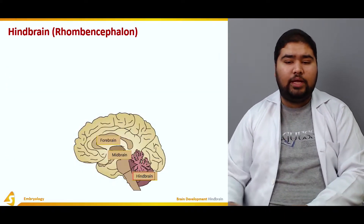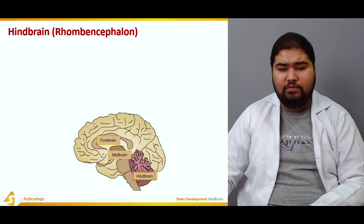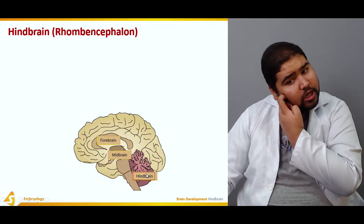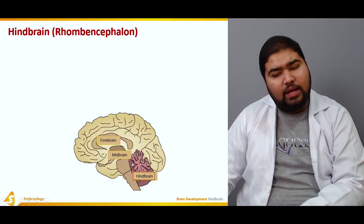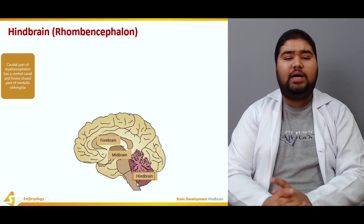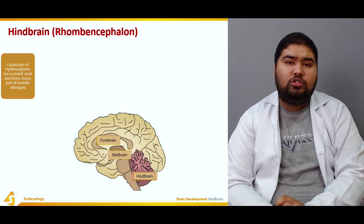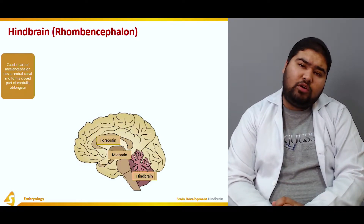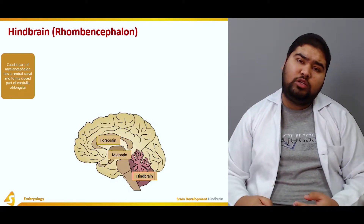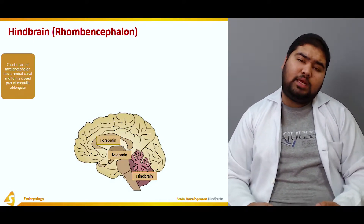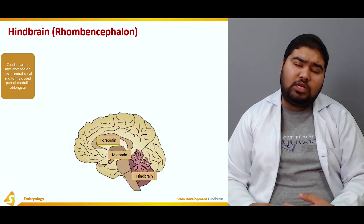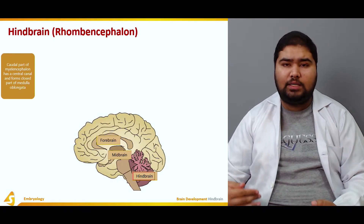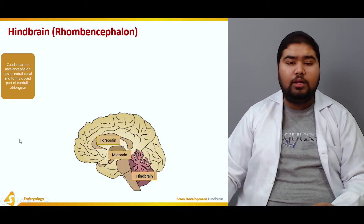In the figure you can see an adult brain — this is the forebrain, this section is the midbrain, and this is the hindbrain. We're talking about the development of the hindbrain. The rhombencephalon divided into two parts: the metencephalon and the myelencephalon. The metencephalon was the cranial part and the myelencephalon was the caudal part, so we're focusing on the caudalmost part of the myelencephalon.